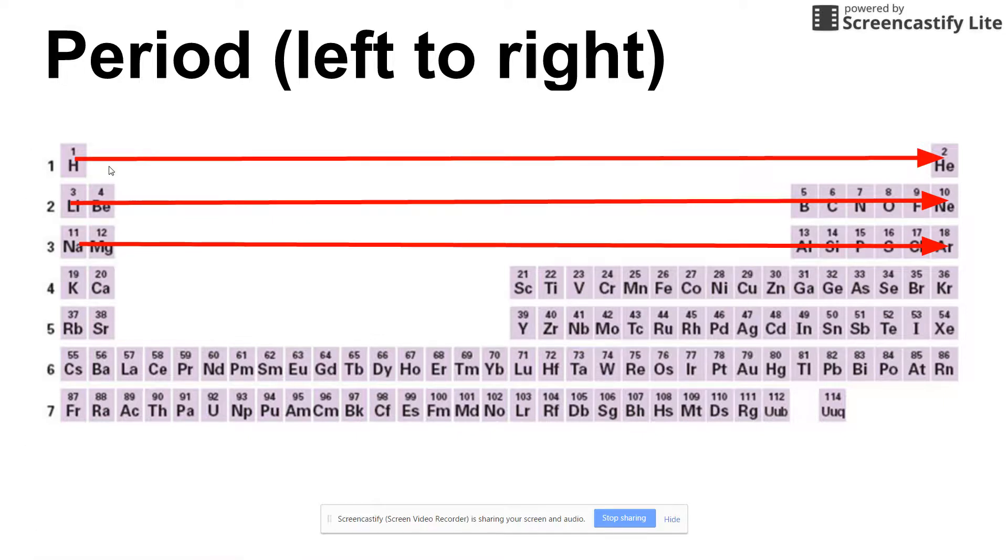So what this refers to are the number of energy levels in atoms of that type of element. For example, in period one, if you're thinking about hydrogen atom, it only has one energy level. Energy levels, why they're important, is because that's where you find electrons, and they surround the nucleus.